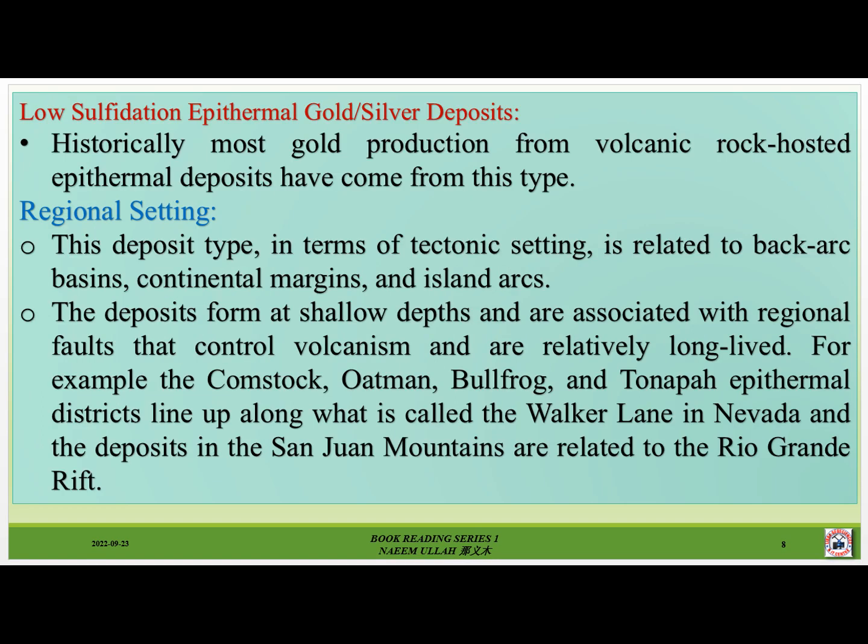Low sulfidation epithermal gold-silver deposits. Historically, most gold production from volcanic-hosted epithermal deposits has come from this type. In terms of tectonic setting, this deposit type is related to back-arc basins, continental margins and island arcs. The deposits form at shallow depths and are associated with regional faults that control volcanism and are relatively long-lived. For example, the Comstock, Ottman, Bullfrog and Tonopah epithermal districts line up along what is called the Walker Lane in Nevada, and the deposits in the San Juan Mountains are related to the Rio Grande Rift.